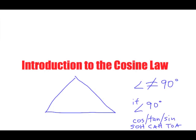And if you don't know what SOH-CAH-TOA is, pretty much we're looking at: sine ratio — SOH — opposite over hypotenuse; cosine ratio — adjacent over hypotenuse; and tangent ratio — opposite over adjacent. So if you have a 90 degree angle, you have a right angle triangle, and this is what you're going to use — SOH-CAH-TOA to solve it.